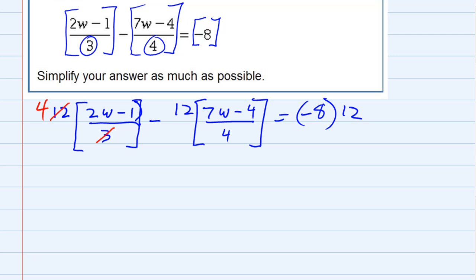Now, since 4 is still outside of this parenthesis, the 4 is going to have to actually be distributed to those terms inside the parenthesis. So I've got 4 times 2w, which is 8w, and then 4 times minus 1, which is minus 4.